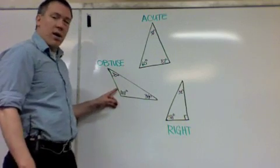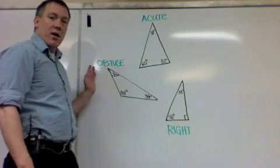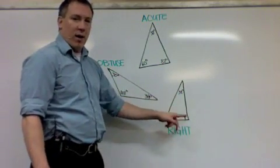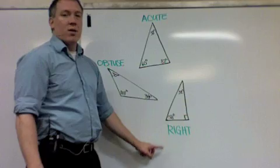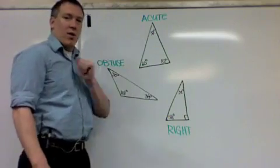Looking here, my largest angle is 111, which is greater than 90, so I have an obtuse triangle. And lastly here, this little square indicates a right angle or 90 degrees, so it's a right triangle. Pretty simple. Acute, obtuse, right triangles.